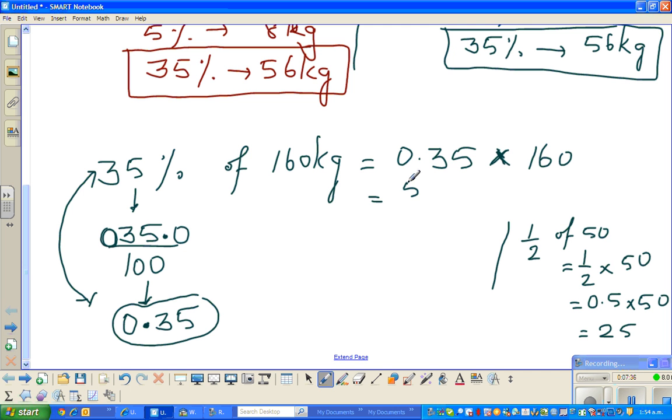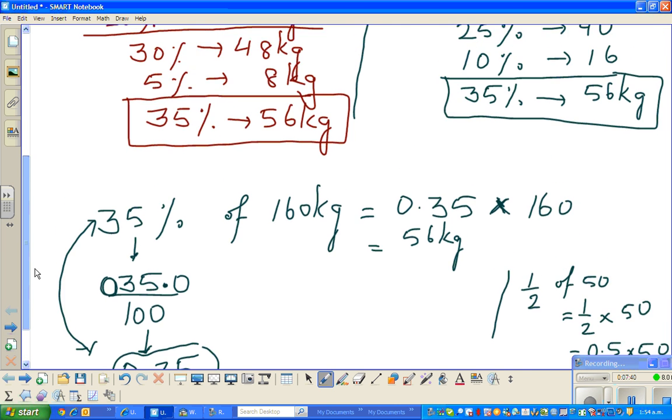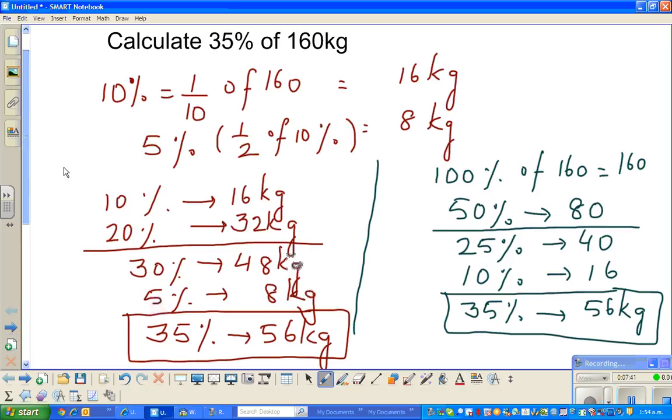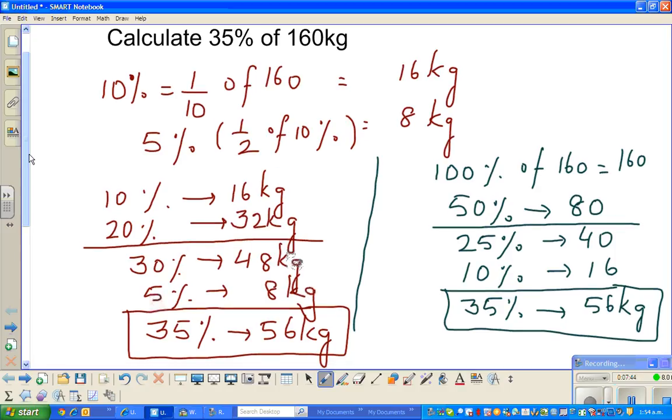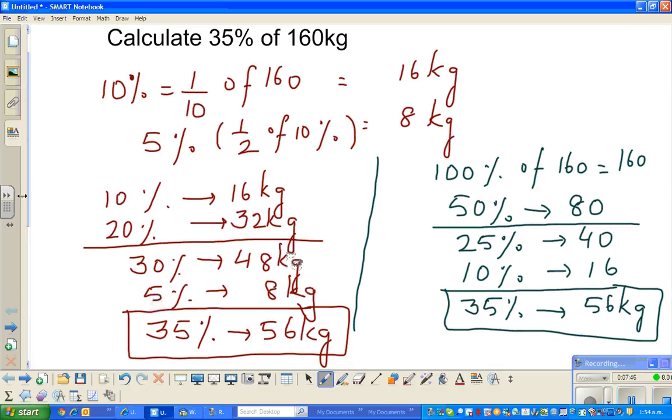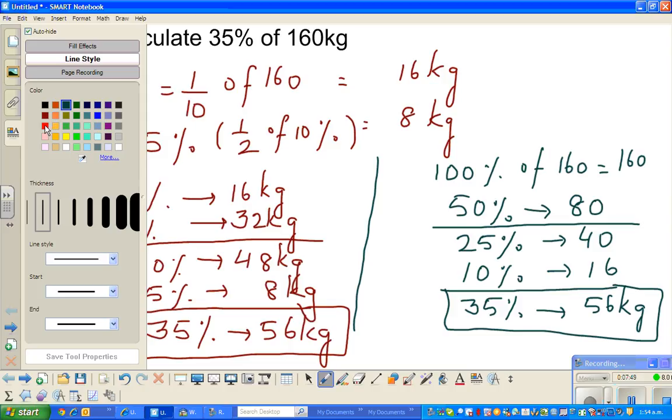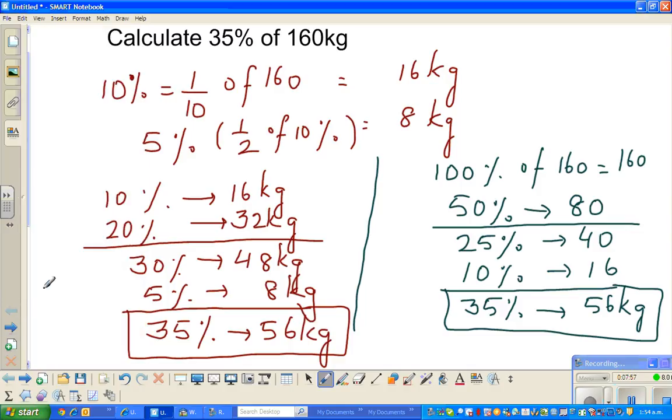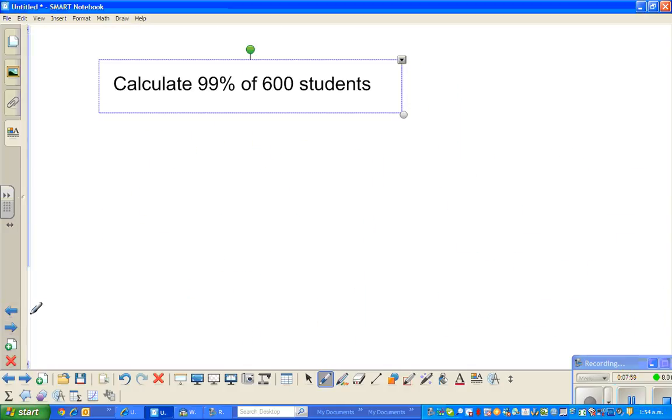Using the calculator, 0.35 times 160 equals 56. We have confirmed our answer: 56 kg. As you play with these numbers, you will learn more and more. A successful, intelligent person is a person who is able to think in a proportional manner.